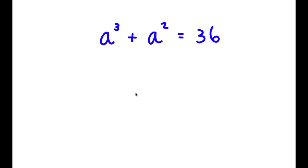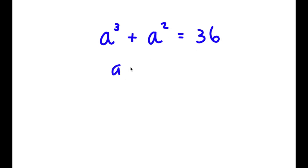In this problem, I have a to the power of 3 plus a squared equals 36. To find all solutions, I need to first find one solution by plugging in numbers. Trying 1 gives 2, which is wrong. Trying 2 gives 12, which is wrong. Trying 3: 3 cubed is 27, and 27 plus 9 equals 36. So a equals 3 is one solution.